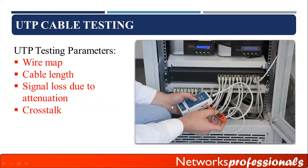When using UTP cable there are some important testing parameters to keep in mind: wire map, cable length, signal loss due to attenuation, and crosstalk. These are important problems to consider when deploying this cable in your network.